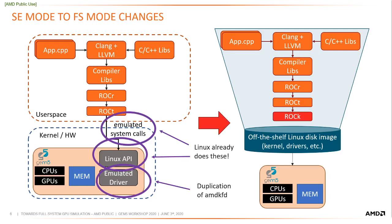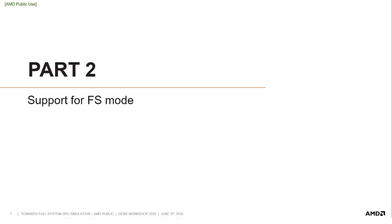This slide gives a general overview of the changes that will occur when transitioning from SE mode to FS mode simulation. The key difference is that we are changing the interface of the stack from thunk-to-emulated-driver to off-the-shelf driver to simulated device. Now in the second part, I'll discuss the modifications required to support full system mode, some work that has already been proposed or completed, and the work remaining before the model can be released into the mainline GEM5.